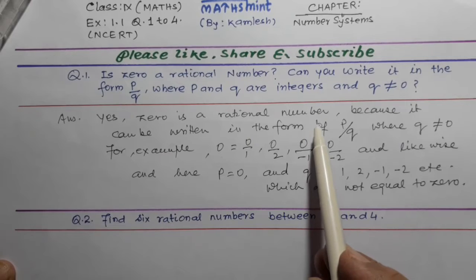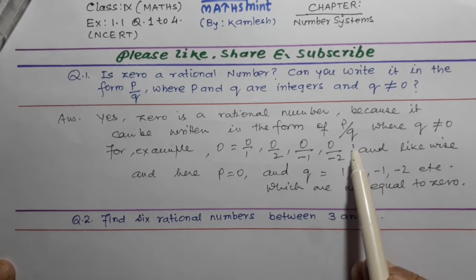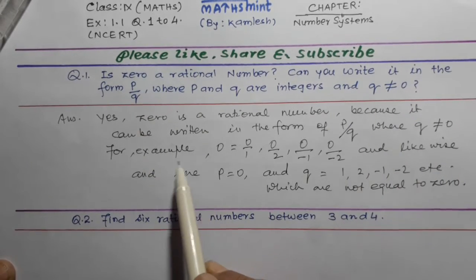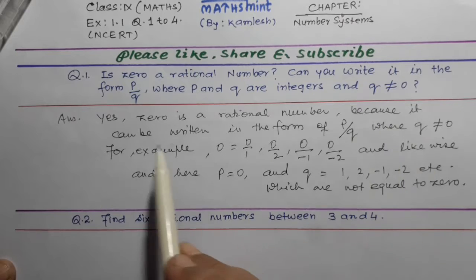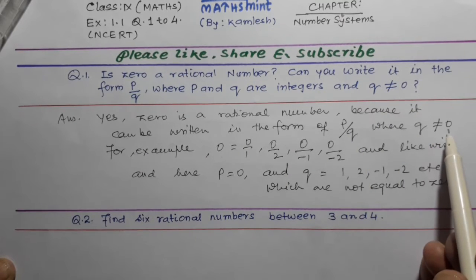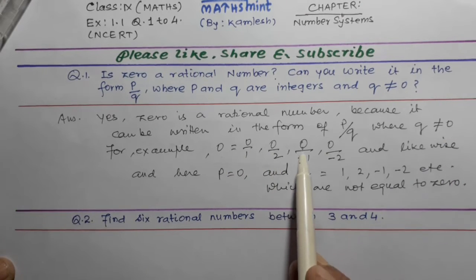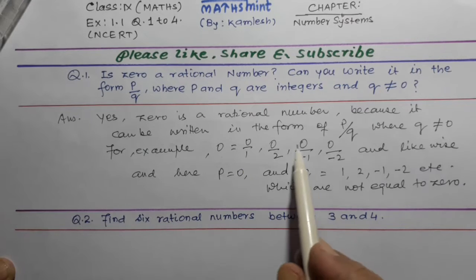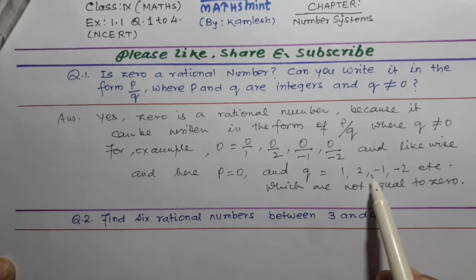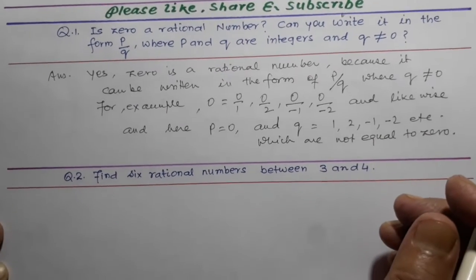Because zero is a rational number, it can be written in the form of P by Q where Q is not zero. For example, zero is equal to zero by one, zero by two, and so on. Here P is equal to zero in all cases and Q is equal to one, two, minus one, minus two, etc., which is not equal to zero. This is the answer.